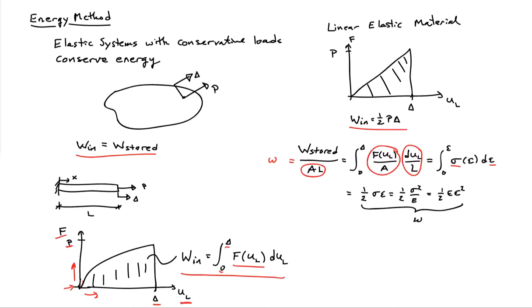Putting it together, we have this relationship now: one-half P delta is equal to the integral over the volume of the body of one-half sigma epsilon. And now the question is, how can we exploit this relationship to solve particular problems? We'll go ahead and do that with a set of two simple examples.